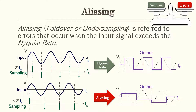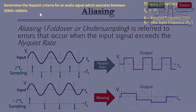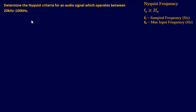We'll go over this more in example problems, which we'll do next. Let's start off with an easy problem. For this one, we're going to determine the Nyquist criteria for an audio signal which operates between 20 kilohertz and 100 kilohertz.